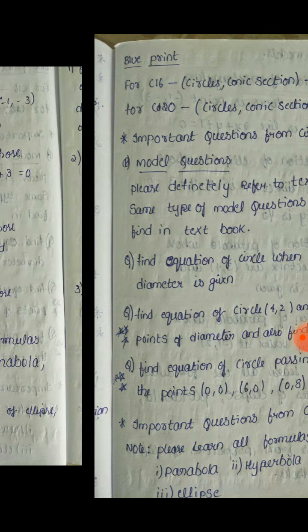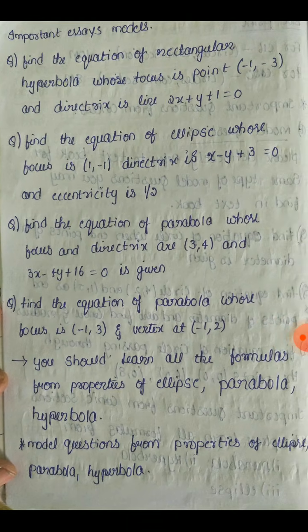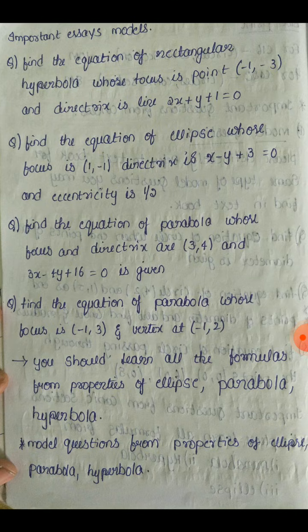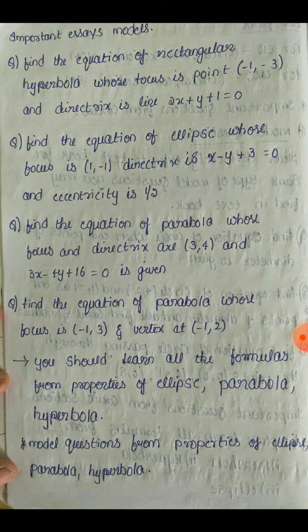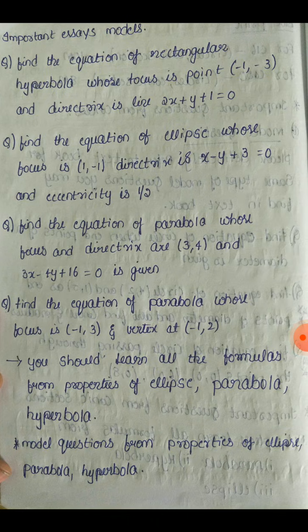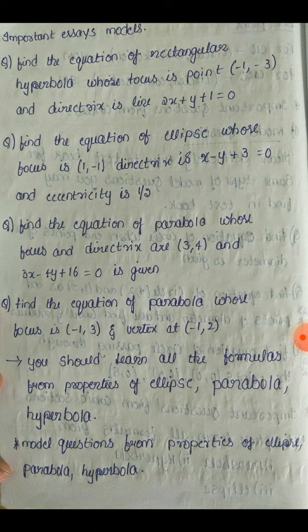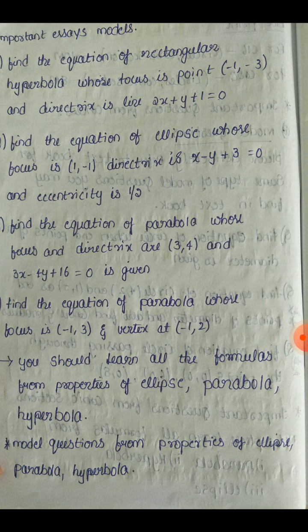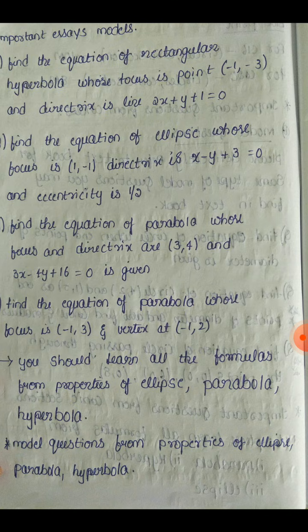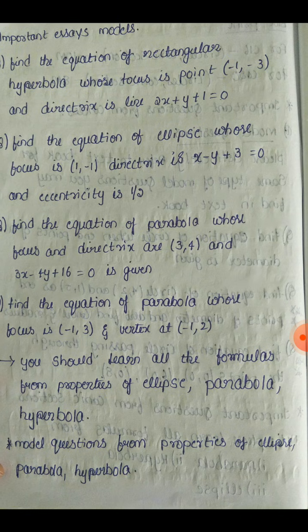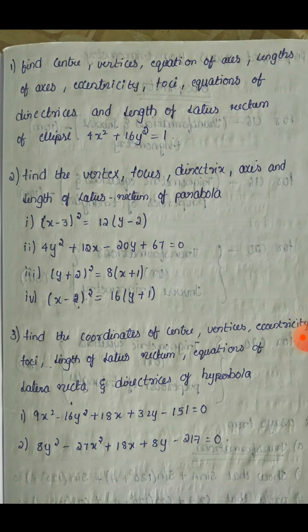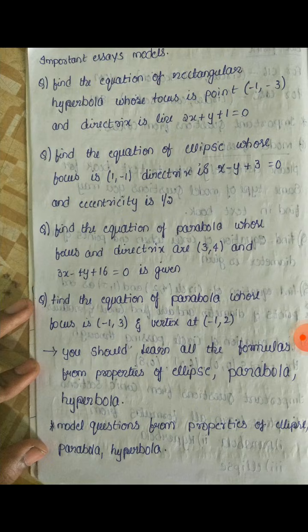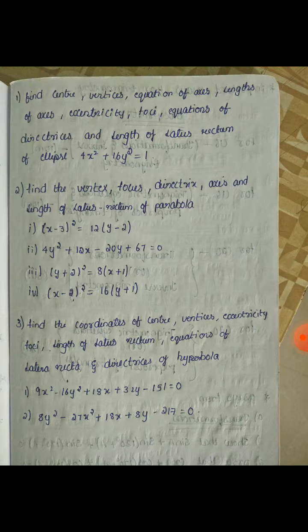From conics: parabola, hyperbola, and ellipse. You should learn all the formulas from ellipse, parabola, and hyperbola. These are very, very important. There are model questions with properties and equations — approximately 4 questions. Prepare the properties level of equations for parabola, ellipse, and hyperbola. These will make up the important essay models.